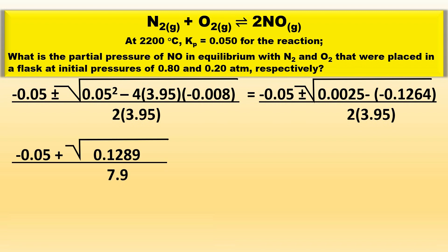Taking the positive root, negative 0.05 plus the square root of 0.1289 divided by 7.9. And x is equal to negative 0.05 plus 0.36 divided by 7.9, which is equal to 0.039 atm.